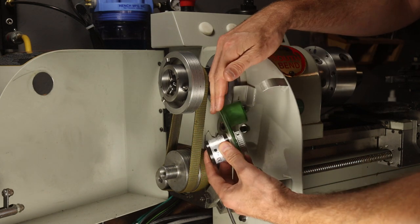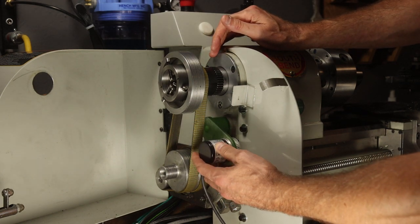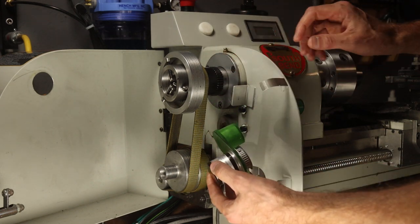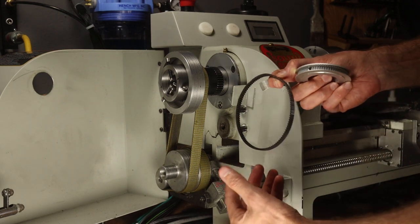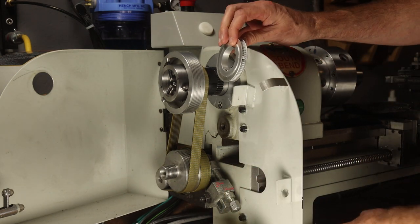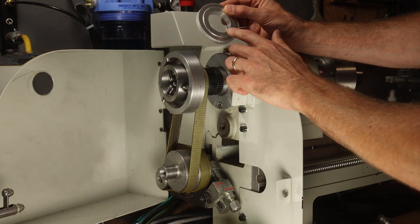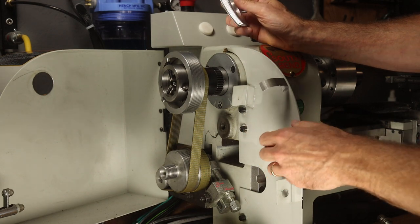I'm going to attach it to a bracket like this which mounts where one of the change gear brackets used to be. The encoder has a small timing pulley on it and that will connect through a timing belt to another timing pulley. We'll need to increase the diameter of this bore and broach this timing pulley to mount it onto the spindle.